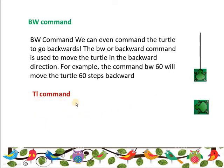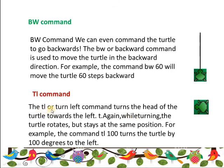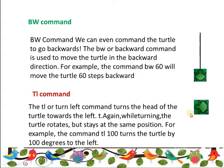Then we have the tl command — turn left. It turns the head of the turtle towards the left. While turning, the turtle rotates but stays at the same position. For example, the command tl 100 turns the turtle 100 degrees to the left. Just as with tr, the tl command only turns the turtle head to the left side — it will not move forward.